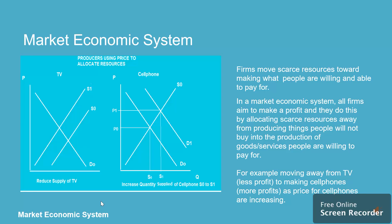Firms move scarce resources toward making what people are willing and able to pay for. In a market economic system, all firms aim to make a profit, and they do this by allocating scarce resources away from producing things people buy less of, into the production of goods and services people are increasingly willing to pay for. For example, moving away from TVs, which make less profit, to making cell phones, which make more profit, as prices for cell phones are increasing.